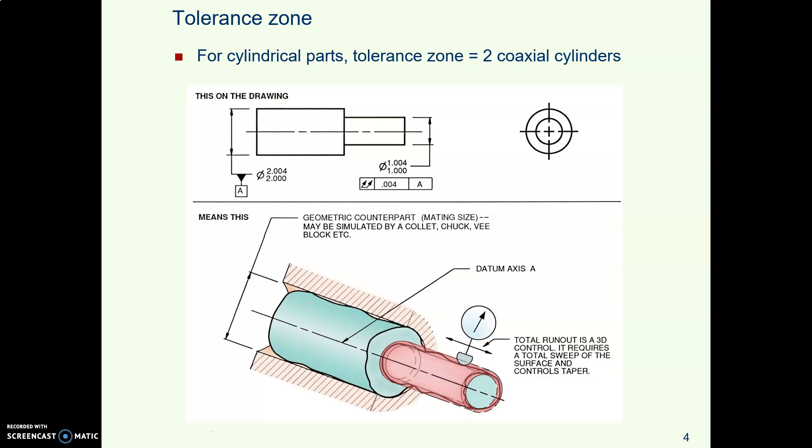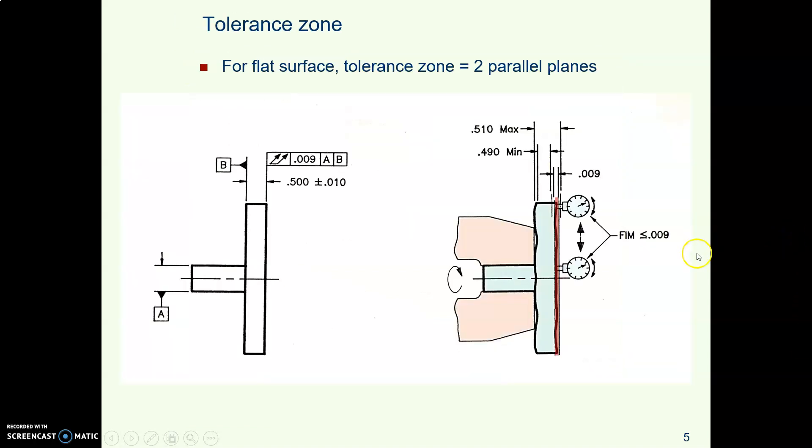If you have a part that is a cylinder then the shape of the tolerance zone is two coaxial cylinders. Coaxial is similar to concentricity. If you have two flat circles they are concentric. If you have two cylinders that share the same center line or same axis they are coaxial. A lot of people say concentric though. So for a cylindrical part the tolerance zone is two coaxial cylinders. If you're controlling runout on a flat surface, then the tolerance zone is two parallel planes within which all the bumps must lie.